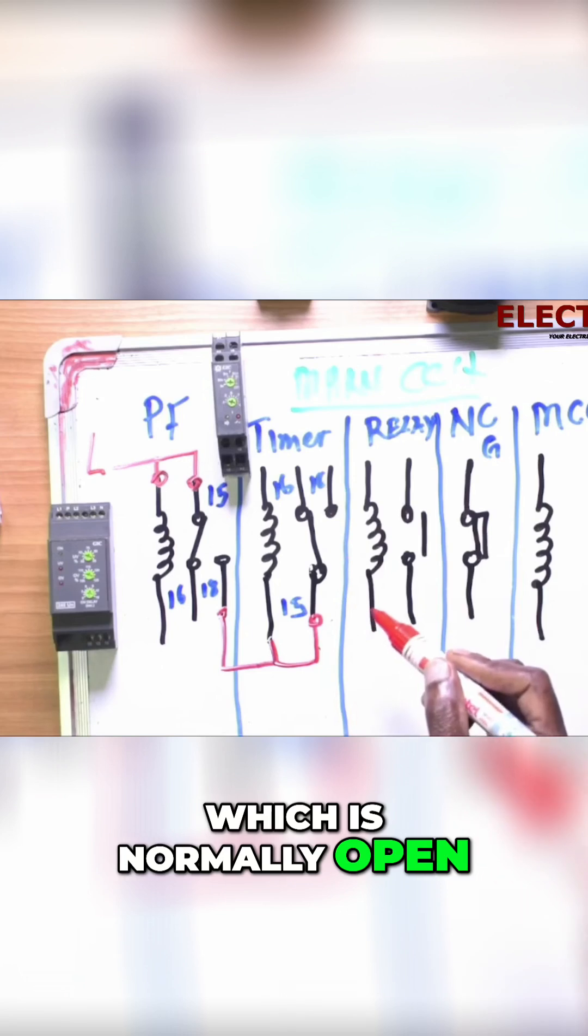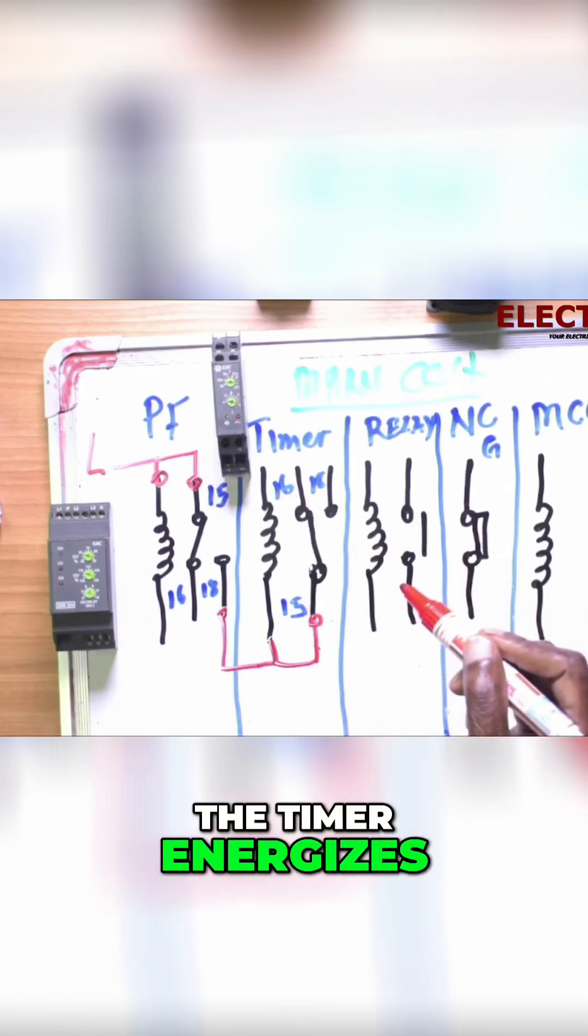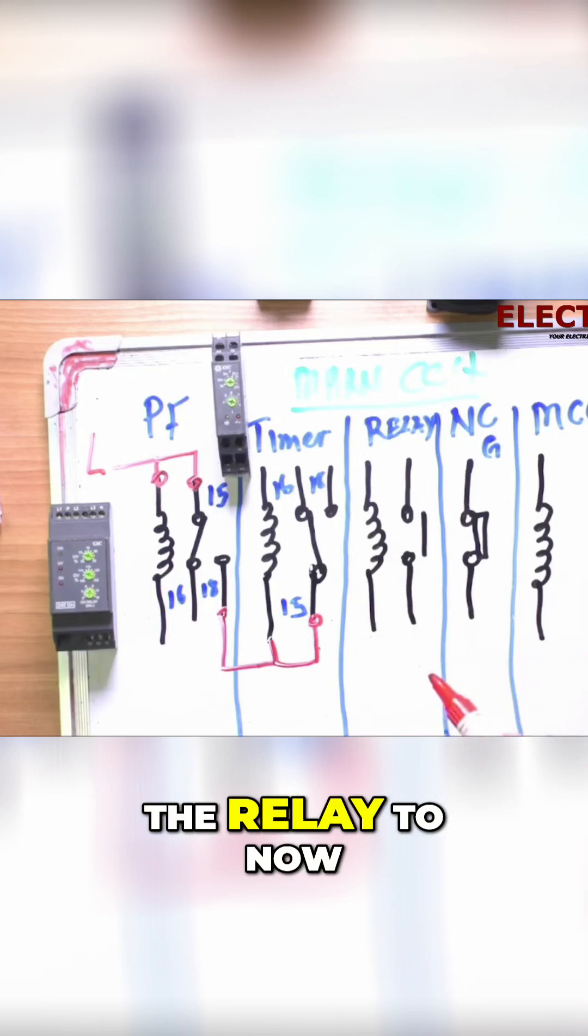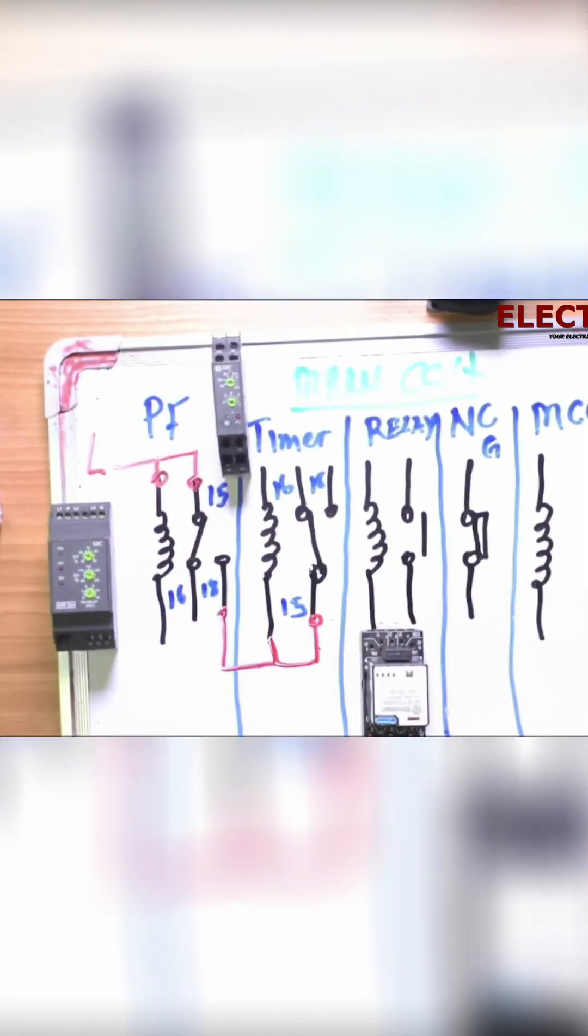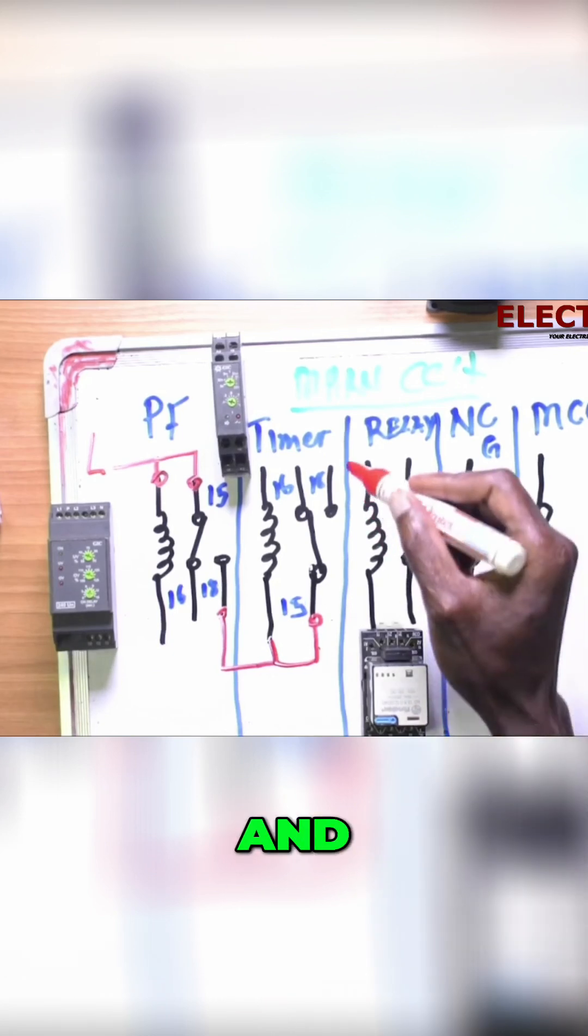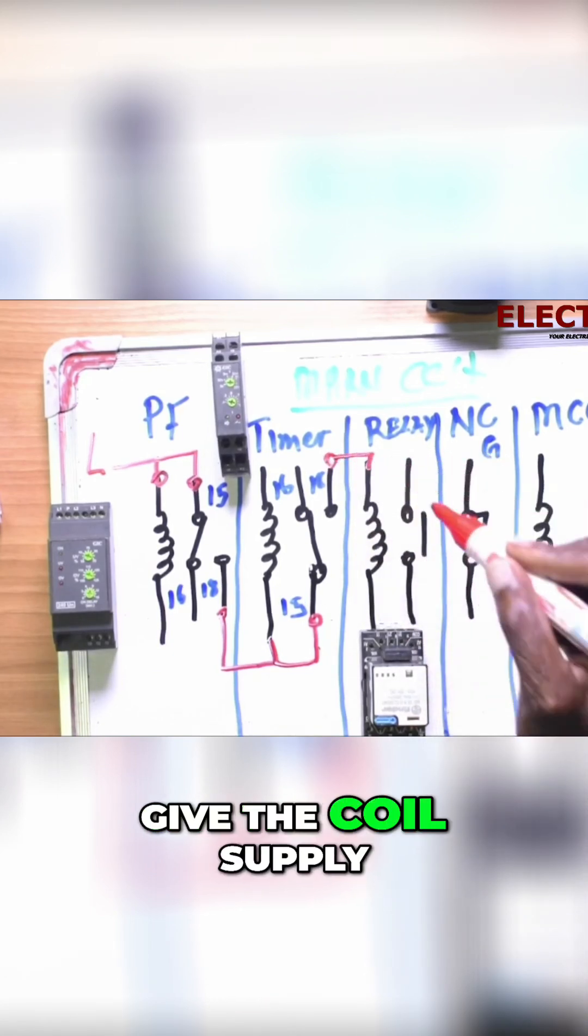This will close when the timer energizes. So we come to the generator relay now, and we will give the coil supply.